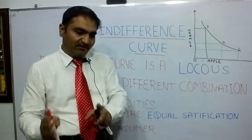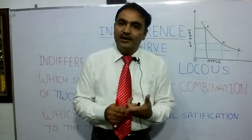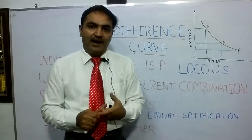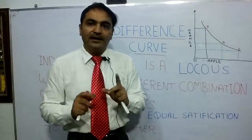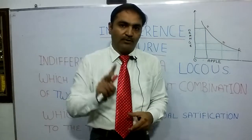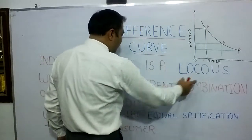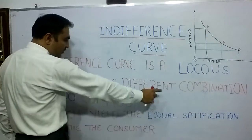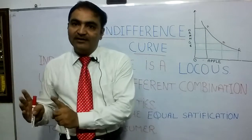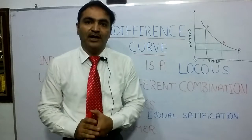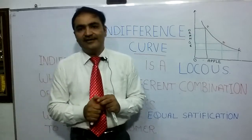In previous topics like the law of demand and law of supply, we dealt with one commodity. But in indifference curve analysis, we have two commodities. Indifference curves are a locus which show the different combinations of two commodities and which yield equal satisfaction to the consumer. Equal satisfaction — how does that work?